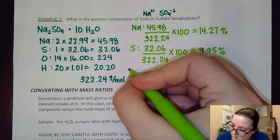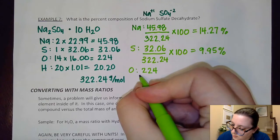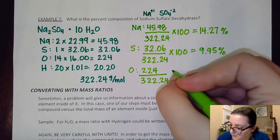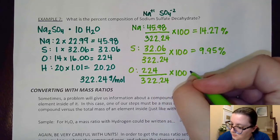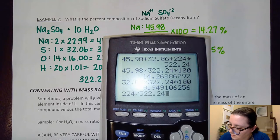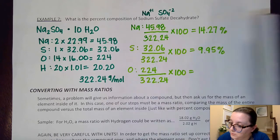Next, I'm going to do my oxygen. So 224 over my 322.24 times 100. And we see that gets around 69.51%.